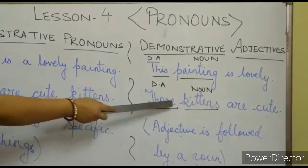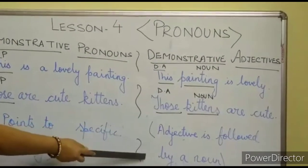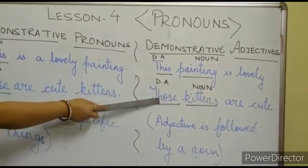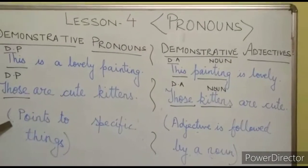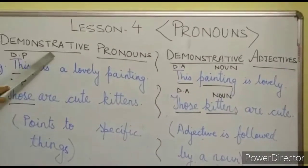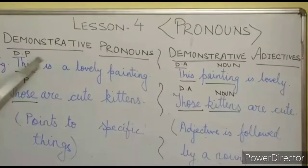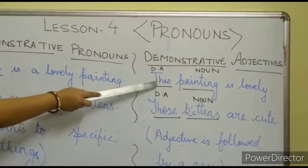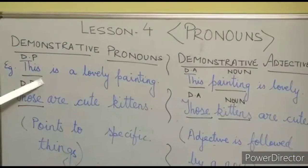So, adjective is followed by a noun — it is always placed before a noun. Demonstrative pronouns always point to specific things. Remember: whenever this, that, these, and those are placed before a noun, they are demonstrative adjectives. Otherwise, they will always be demonstrative pronouns.